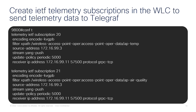Next we want to create IETF telemetry subscriptions in the wireless controller to send telemetry data to Telegraph, which is going to be our receiver. A quick recap: the first element is a subscription number, which groups all configurations in one set of data. The second is the encoding specified inside that, which is used by Telegraph. The next is the file path, which is the data we want to send.